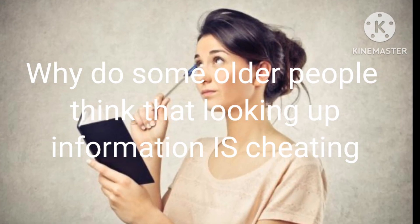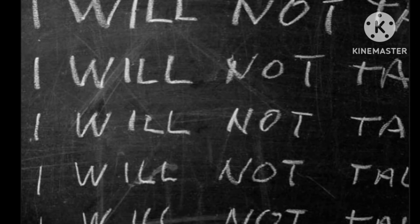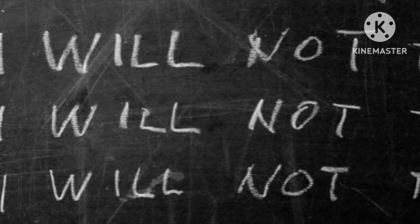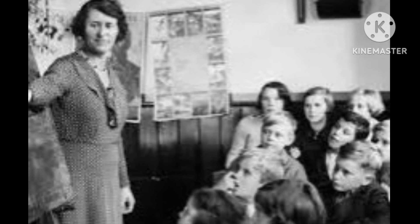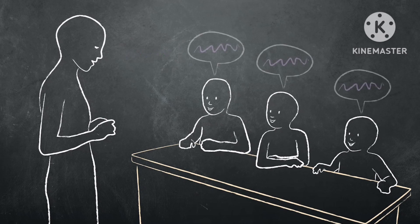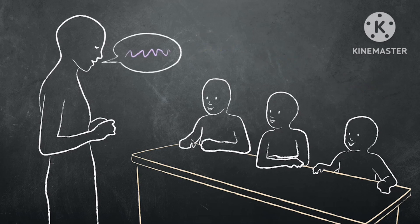Why do some older people think that looking up information is cheating? It could be that when they went to school they were taught by the rote method. Rote learning is memorizing information so that it can be recalled by the learner exactly the way it was read or heard. The major technique used for rote learning is learning by repetition, based on the idea that a learner can recall the material exactly, but not its meaning, if the information is repeatedly processed.